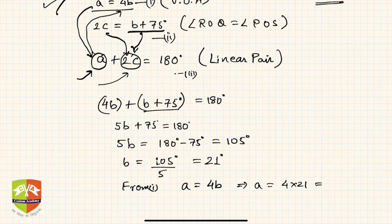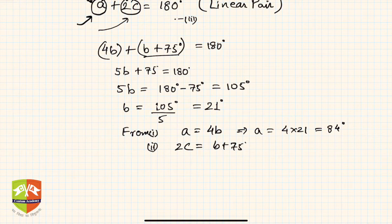And from equation two, 2c is equal to b plus 75 degrees, right? This implies 2c is equal to b, which was 21 degrees, plus 75 degrees, which is equal to 96 degrees. So what is c then? c will be 96 degrees upon 2, which is 48 degrees.